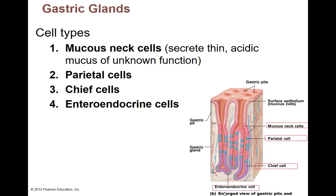There are four main cells we find in our gastric glands. We have the mucus neck cells — they do secrete mucus. However, the mucus that these particular cells make, found down in the gland rather than up in the epithelial tissue, is a thin acidic mucus versus an alkaline mucus. We don't know why we make an acidic mucus down here — it's an unknown function.